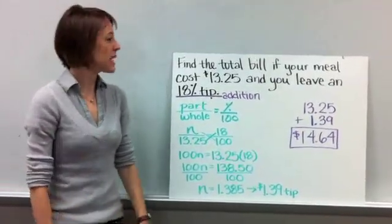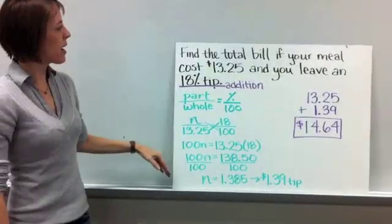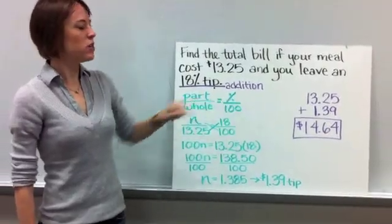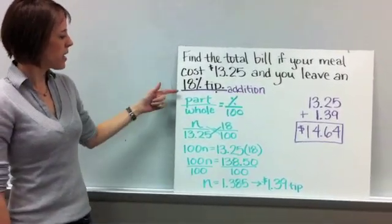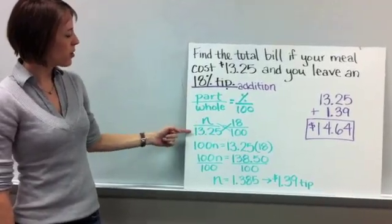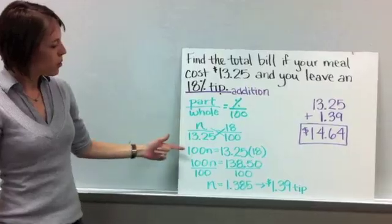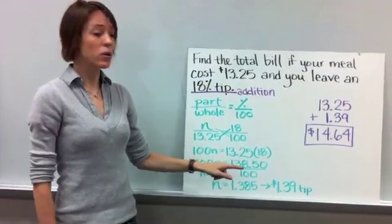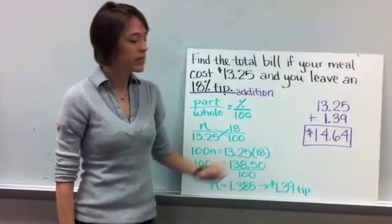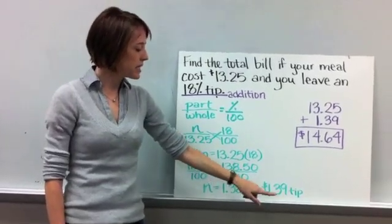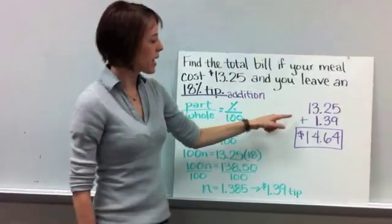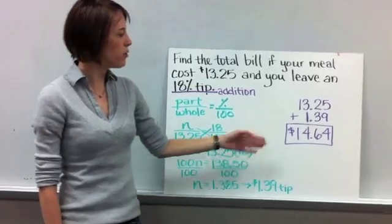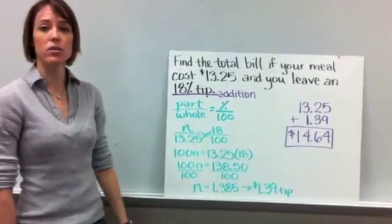Alright, so here is example two. You should have worked the entire problem out. Just to make sure that you're understanding that when you have a tip, remember, you're going to add. So you set it up, figuring out what your percent is, what your part and your whole are. Once you did all the work, you should have come up with n was equal to $1.385, which we're going to round to $1.39, because we always round to the hundredth. And remember, this is the tip. So we're going to take that and we're going to add it back to $13.25. And so that means that your total amount that you paid when you went out to eat was $14.64.